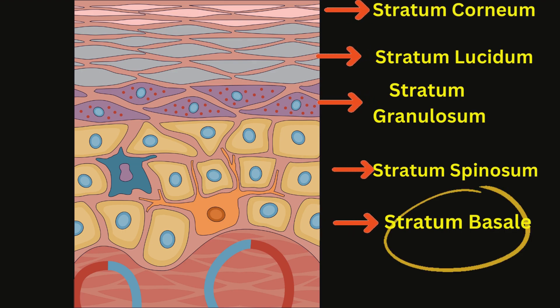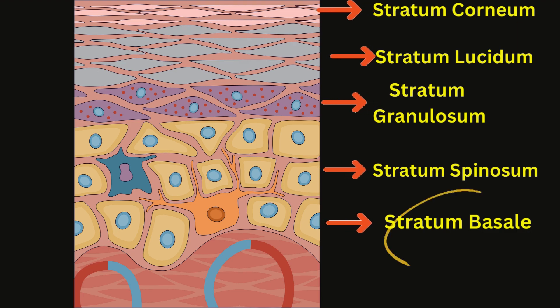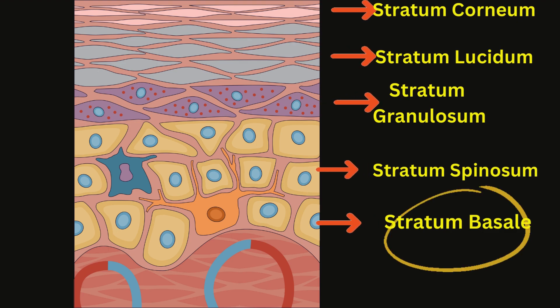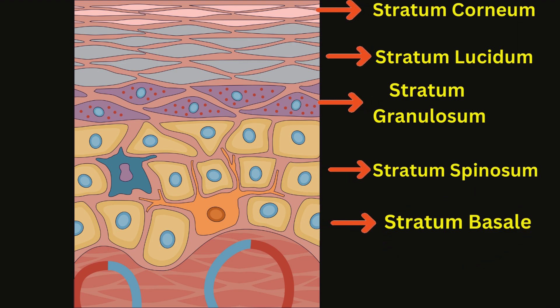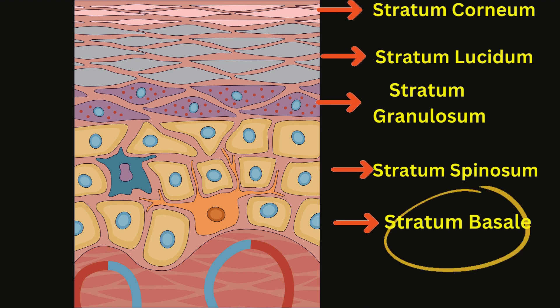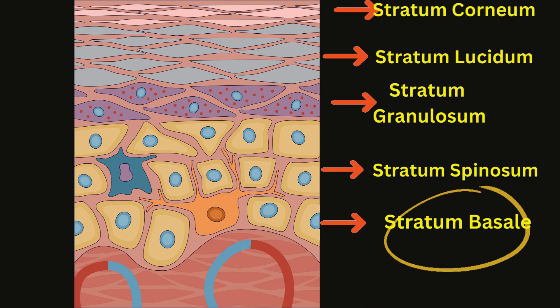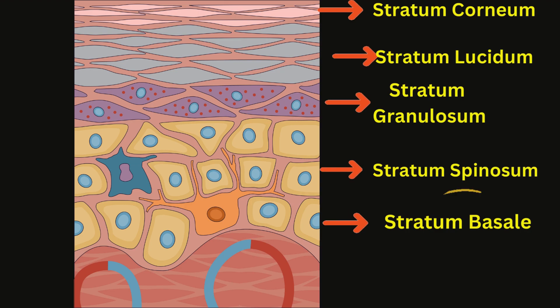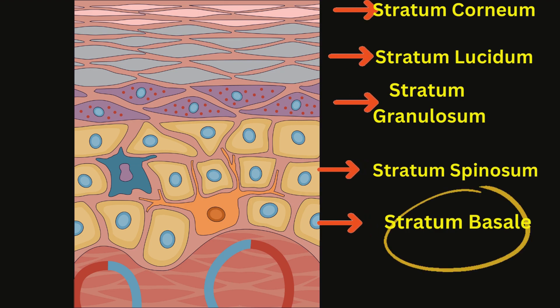Stratum basale: the bottom layer of the epidermis, composed mainly of basal cells and melanocytes. Basal cells are responsible for the continuous renewal of the epidermis, while melanocytes produce the pigment melanin.